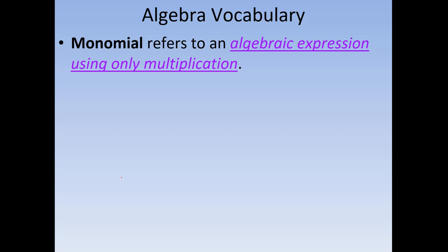Now we're turning into the polynomial section. Monomial is basically referring to an Algebraic Expression that only has multiplication. Examples of monomials are 5x squared, 8x, and 12x cubed. There's no addition, subtraction, or anything like that.